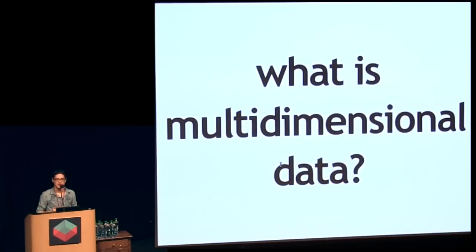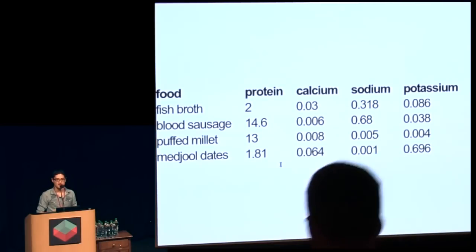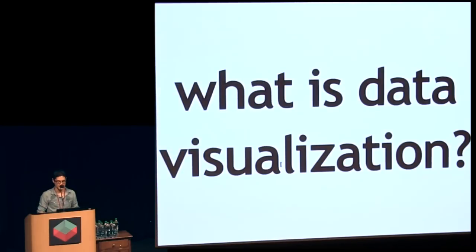So what is multidimensional data? Multidimensional data looks kind of like this. You have a bunch of objects, and they have a bunch of properties. In this case, we have some foods - fish broth, blood sausage, puffed millet, some dates. And they've got values for protein, calcium. We'll take a look at this data set actually in a couple minutes.